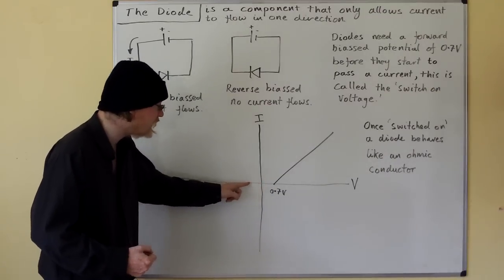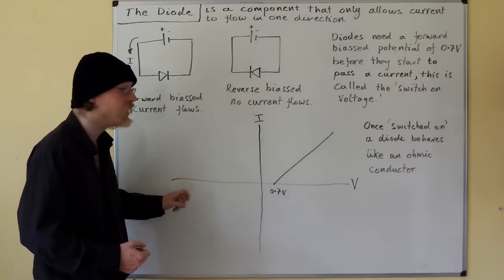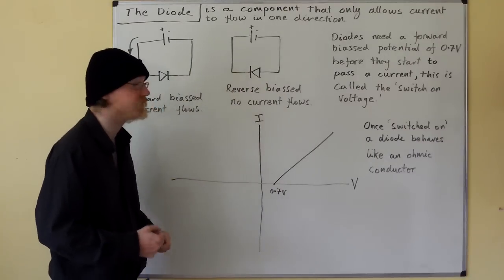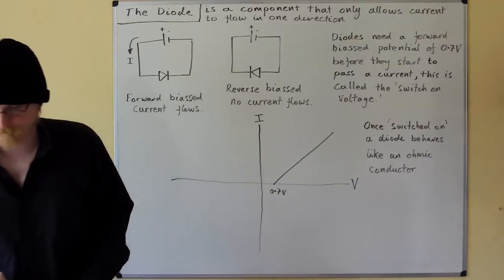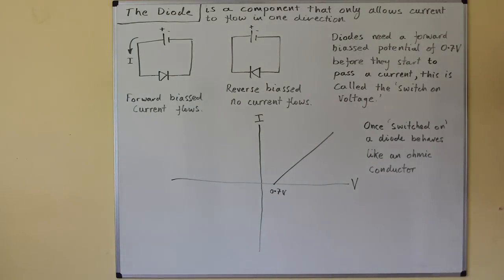However, if we were to apply the voltage in the opposite direction, we would have a reverse biased diode, and no current would flow.